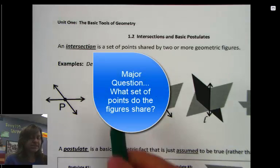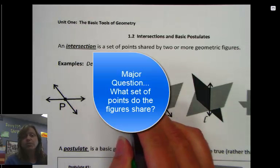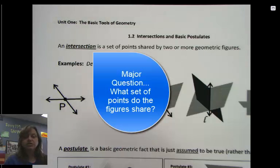As this definition says, an intersection is a set of points shared by two or more geometric figures. So here's some examples, and we're going to describe the intersection.